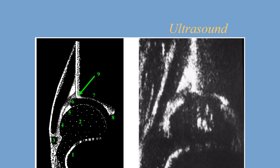In this normal hip ultrasound image with its diagrammatic representation, the 9 structures are as follows: the chondro-osseous border, which is the junction between the bony and cartilaginous parts of the femur; the femoral head; the synovial fold, which is the attachment of the capsule to the neck of the femur creating a fold; the joint capsule; the labrum, the triangular segment; the cartilaginous part of the roof, which will become ossified as the child gets older; the bony roof; the lower limb of the bony roof; the turning point; and the ilium.